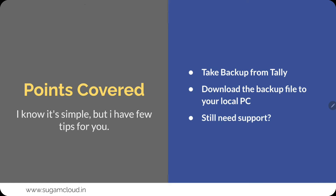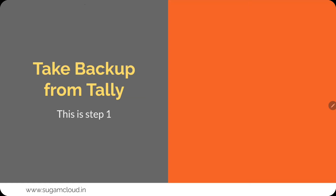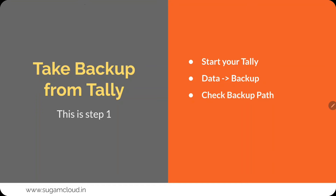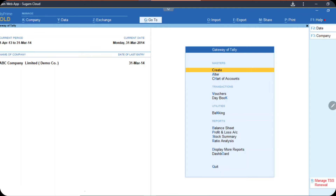We will also talk about what to do in case you need any support. The first step is how to take backup from Tally. You start your Tally, go to Data, and go to Backup. It is a normal Tally backup process. Check the backup path — it is generally set, but we will tell you what it should be. In case it is not correct, you have to change it. Then start the backup and check the backup file to verify whether the backup is completely done.